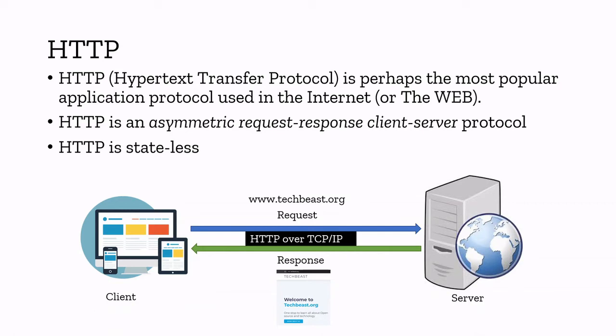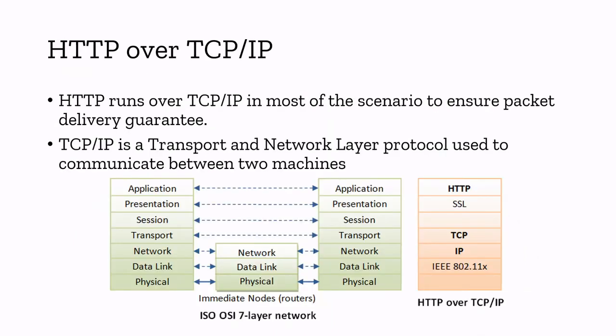This HTTP protocol always runs over TCP and IP. TCP is from the transport layer and IP is from the network layer of the OSI model. Let's talk in detail about HTTP over TCP/IP. As I said before, HTTP runs over TCP/IP in most scenarios. The reason behind this is, let's say you are requesting information from the client to the server or the server is responding to the client's request — there should be a packet delivery guarantee.